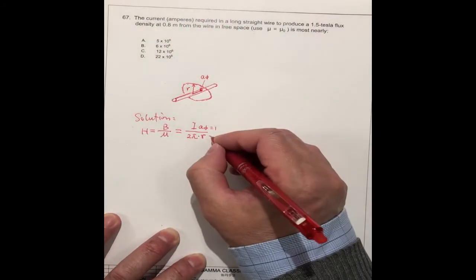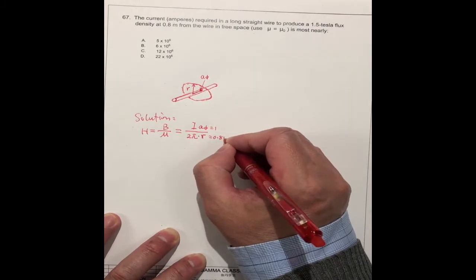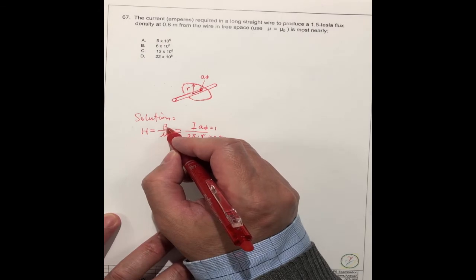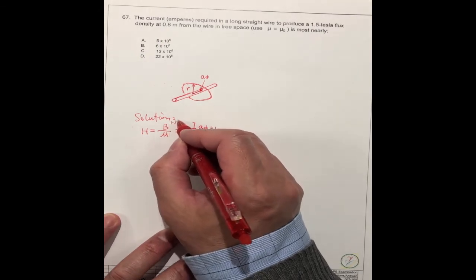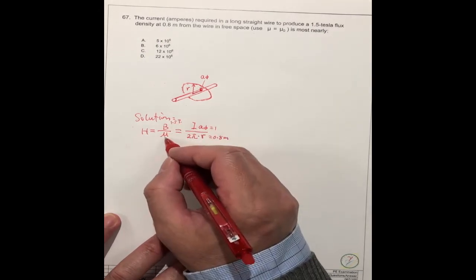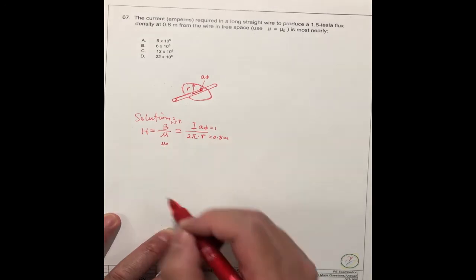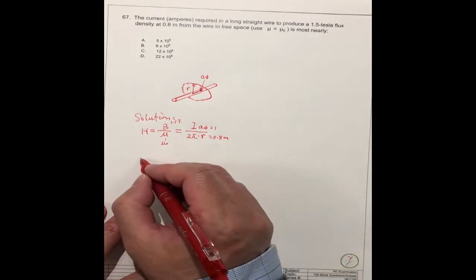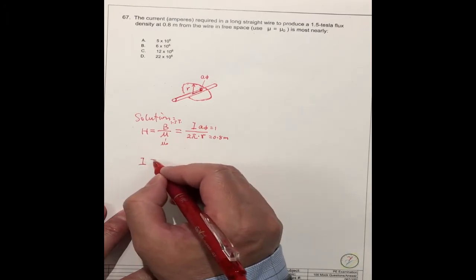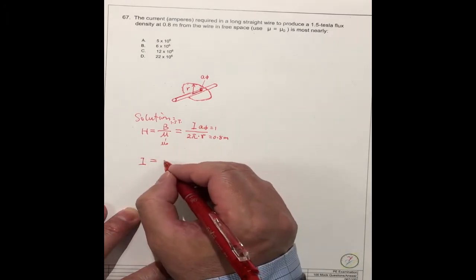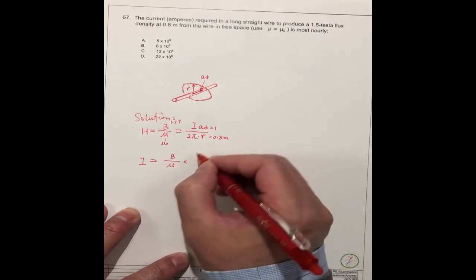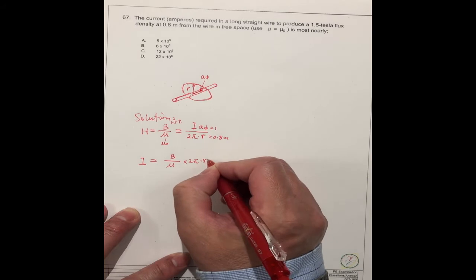We know this one, so we can just simply give this one: I equal to B times 2 pi R divided by mu. So equal, this is 1.5.